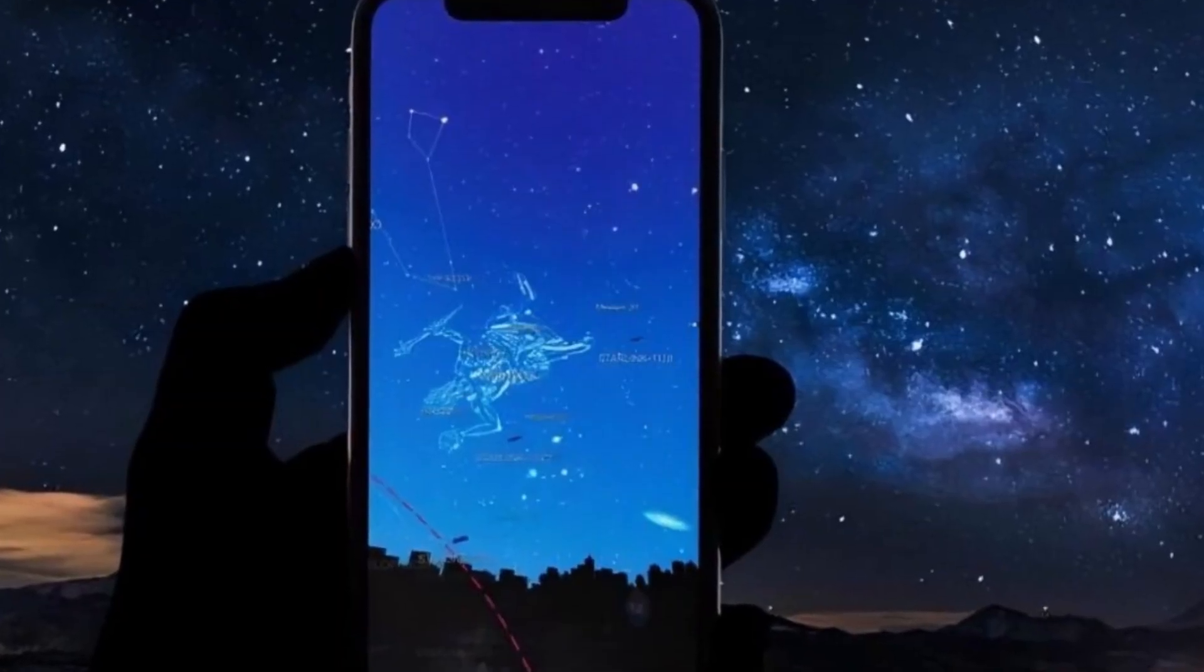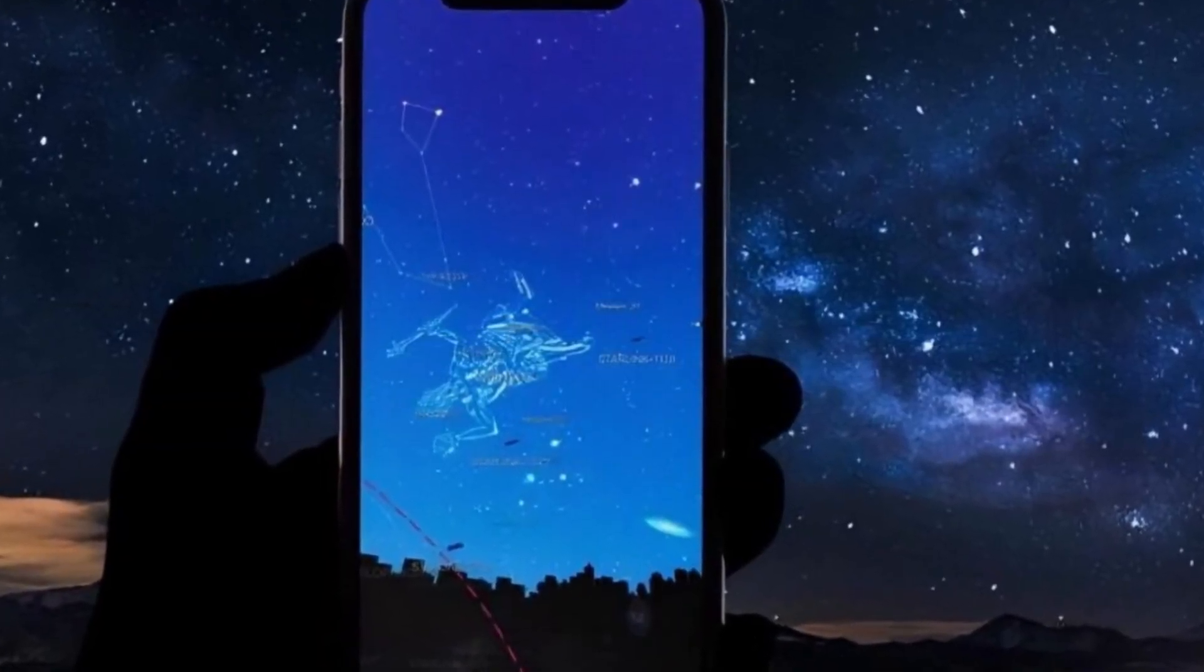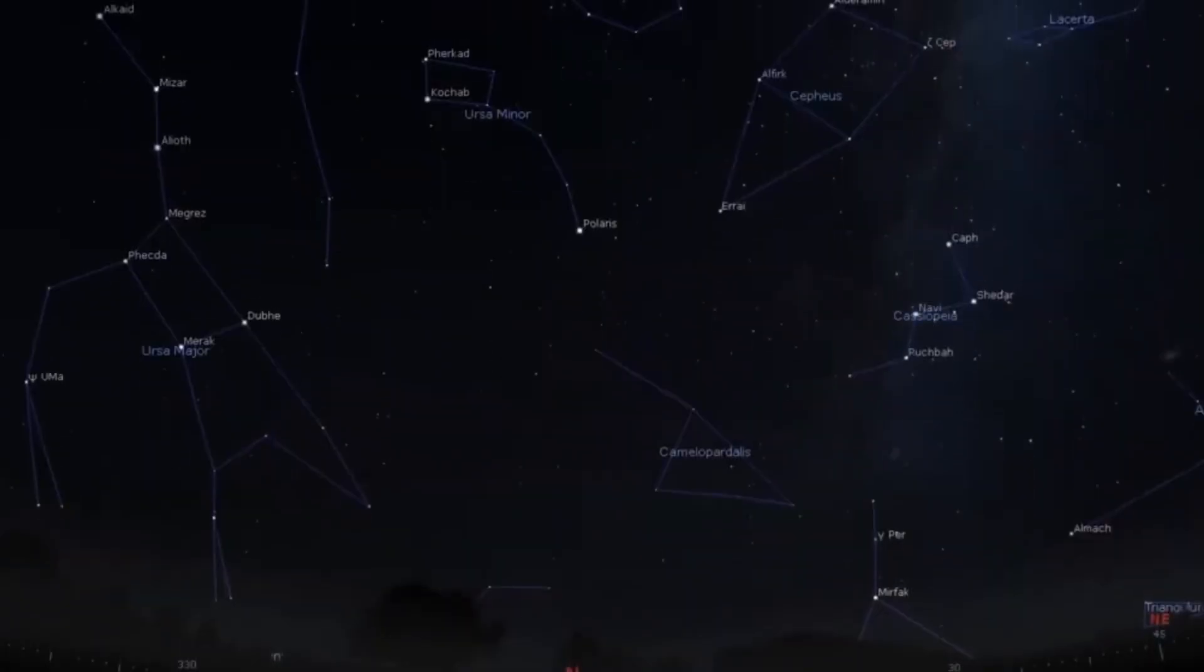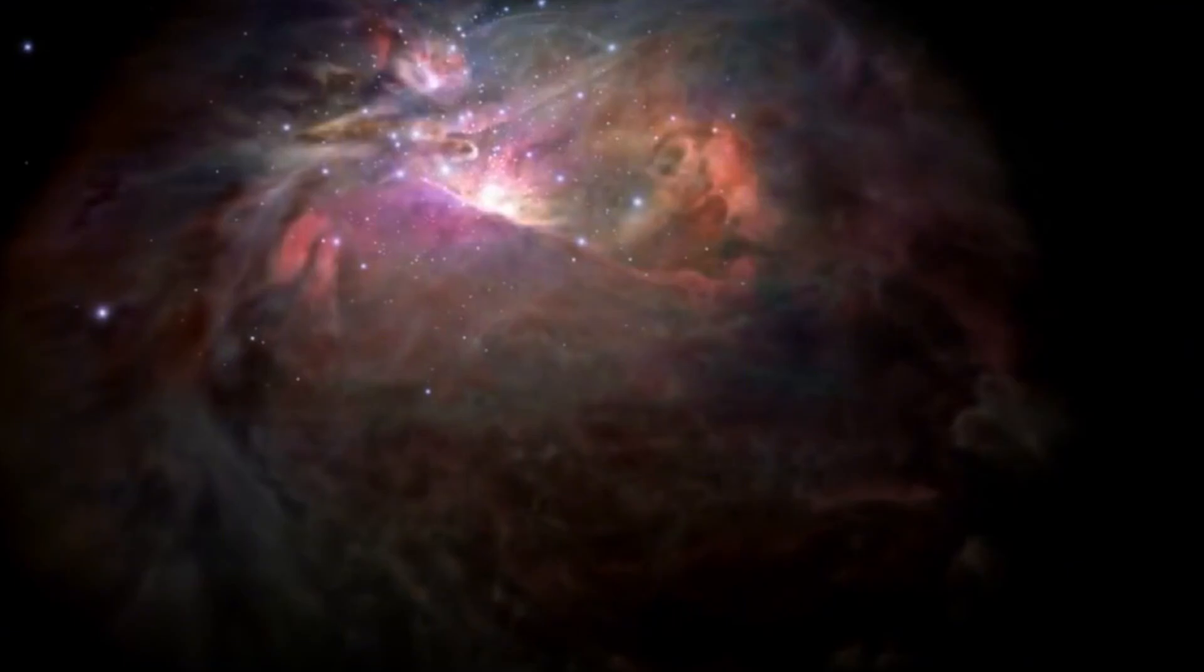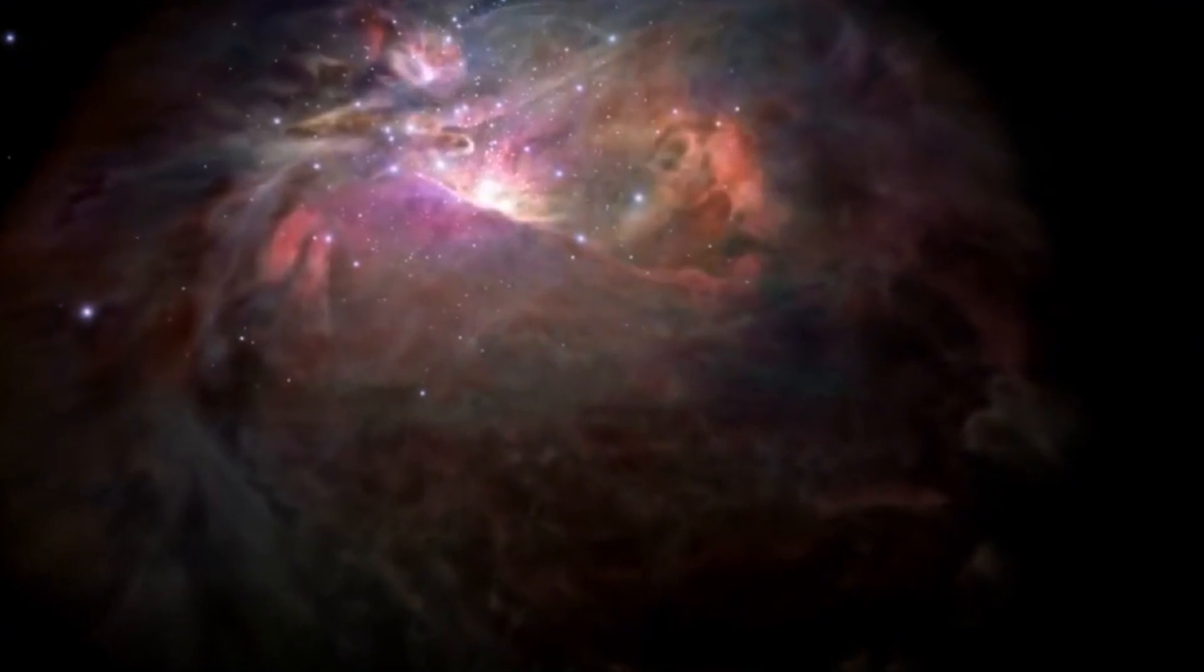For assistance in locating the constellation, consider using an astronomy or stargazing app. Begin observing Corona Borealis now to acquaint yourself with its position in the sky. This way, when the nova emerges, you'll be prepared to locate it.